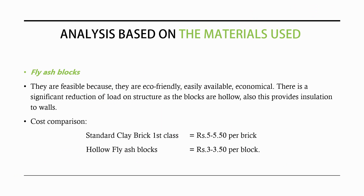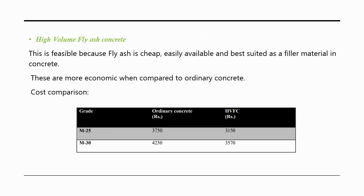Analysis of construction materials: Fly ash blocks are feasible because they are eco-friendly, easily available, and economical. They significantly reduce structural load due to their hollow form and provide wall insulation. High volume fly ash concrete is feasible because fly ash is cheap, easily available, and best suited as a filler material in concrete, being more economical than ordinary concrete. Cost comparisons for both are provided.